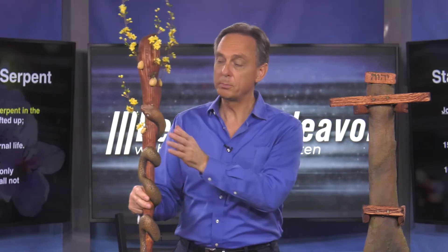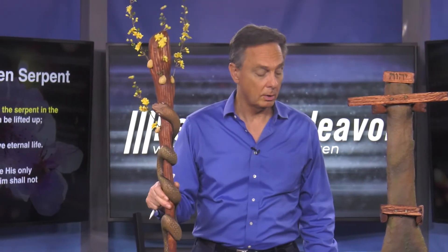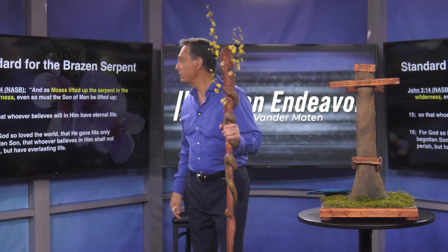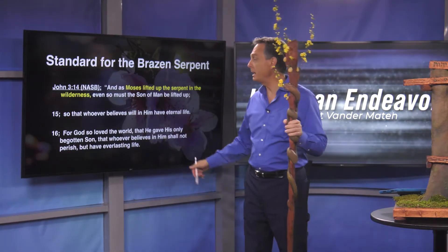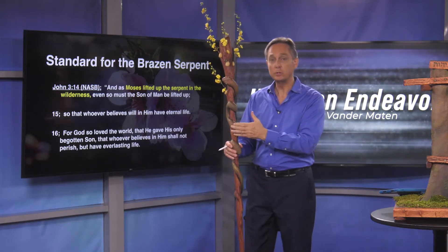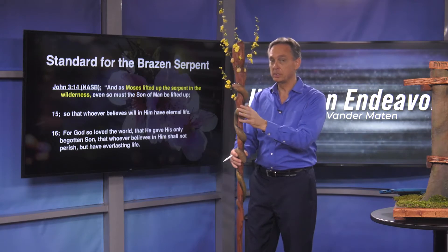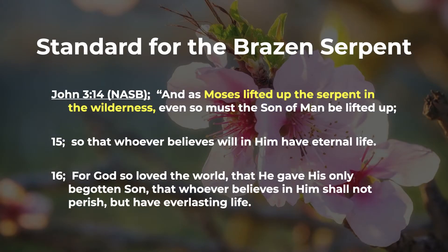This was on the standard in the wilderness where the serpent would eventually be placed. The Bible tells us in John 3:14 that the Lord Himself referenced this, saying: as Moses lifted up the serpent in the wilderness, even so must the Son of Man be lifted up, that whosoever believes in Him would have the same gift given to those who ate from the fruit of the Tree of Life — that they will be able to have eternal life. For God so loved the world that He gave His only begotten Son, that whosoever believeth in Him should not perish, but have everlasting life.